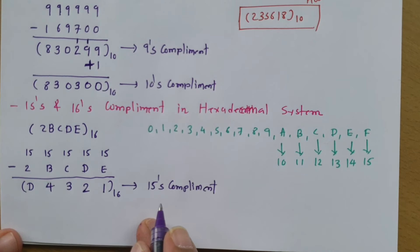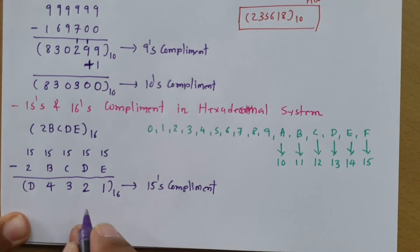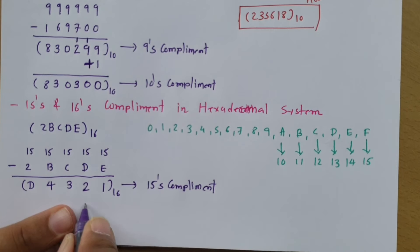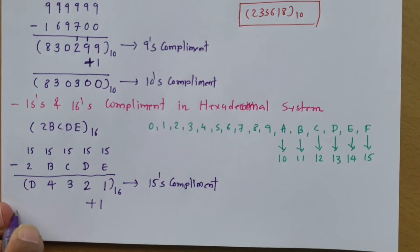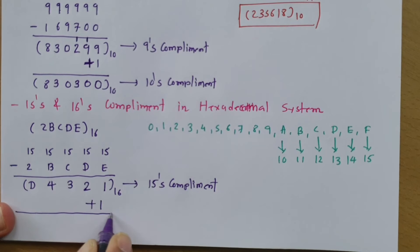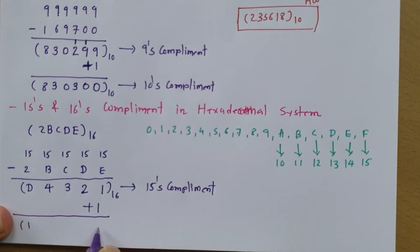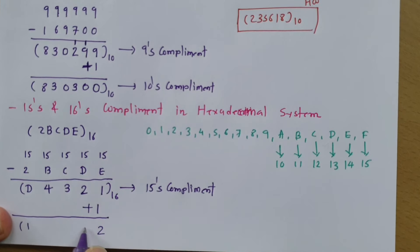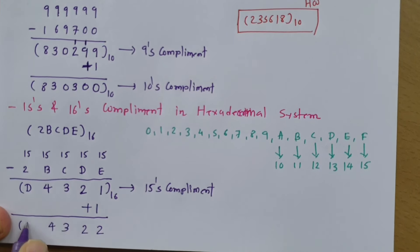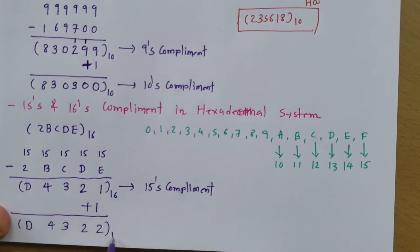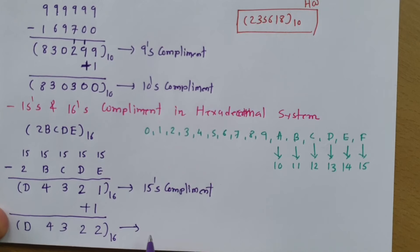Adding 1 to the 15's complement gives the 16's complement. So 1 plus 1 is 2, then 2, then 3, then 4, and then D. That is the 16's complement.